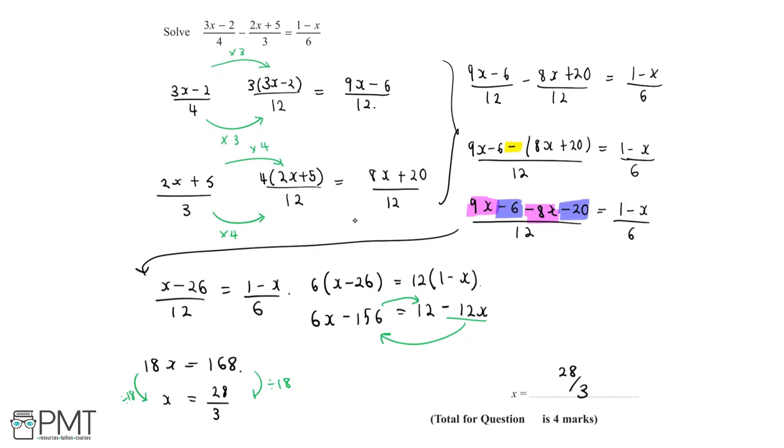Now this question is worth four marks. So let's take a look at where these marks are allocated. The first mark will be for writing at least two fractions with a common denominator, which we've done clearly when we made the common denominator of the two fractions in the equation 12.